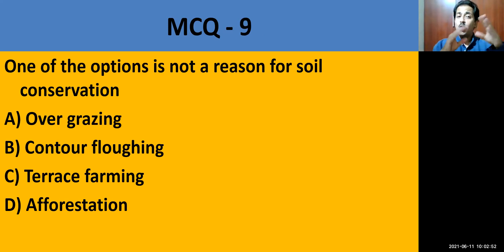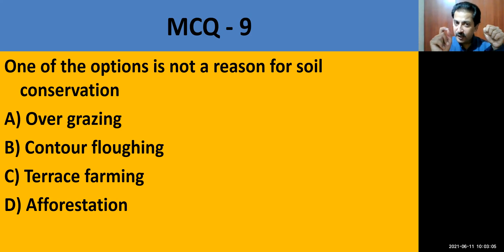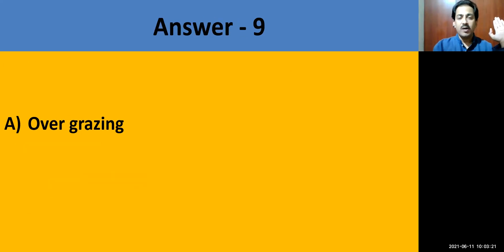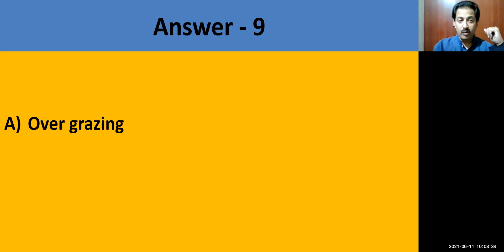MCQ question number 9: One of the options is NOT a reason for soil conservation. Options: overgrazing, contour plowing, terrace farming, or forestation. The correct answer is overgrazing. Because when you allow cattle to graze too much, it plucks the plants and grass along with the roots, potholes are created, and when it rains it starts eroding. So overgrazing must be avoided.